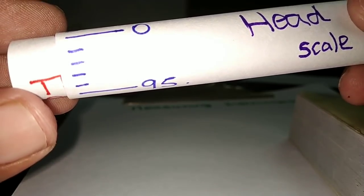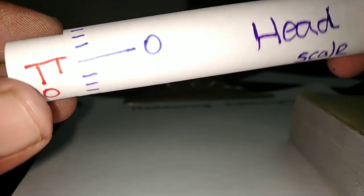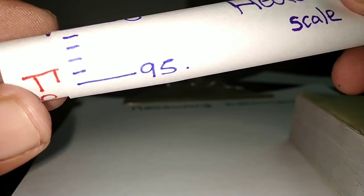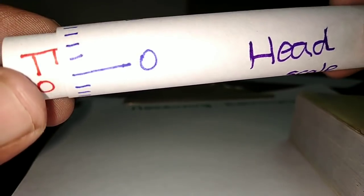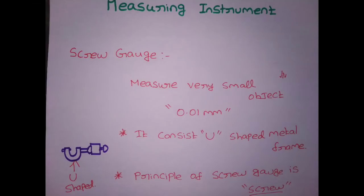Now let's consider positive zero error. Let's say positive zero error and negative zero error, and try the correction. Let's measure the screw gauge — measure the same as a small object. Let's look at the least count: 0.01. With a full rotation, it's 1mm, so for one division it's 0.01mm.